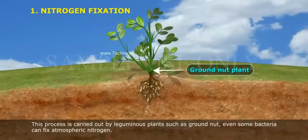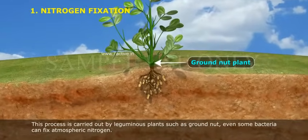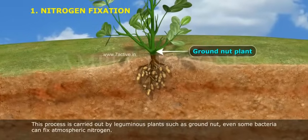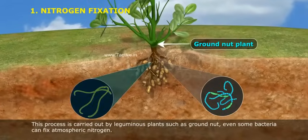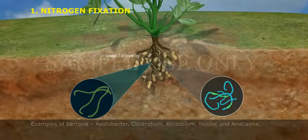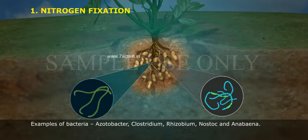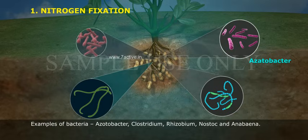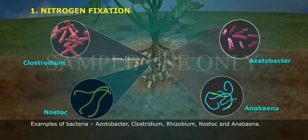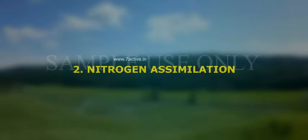This process is carried out by leguminous plants, such as groundnut. Even some bacteria can fix atmospheric nitrogen. Examples of bacteria: Azotobacter, Clostridium, Rhizobium, Nostoc, and Anabaena.